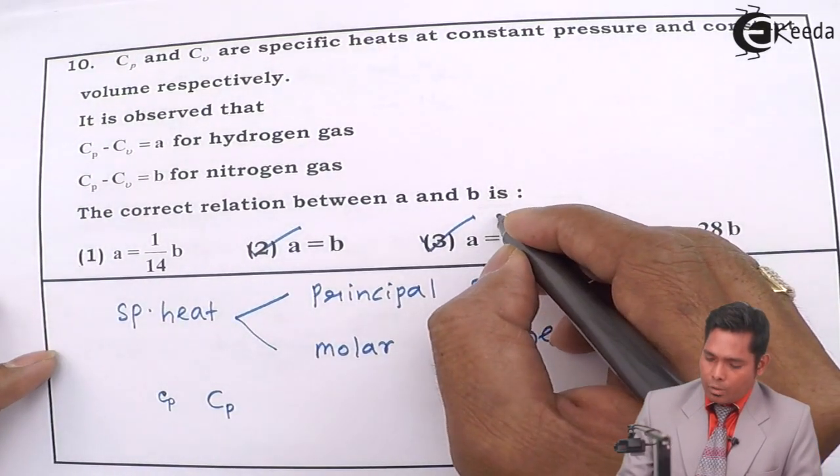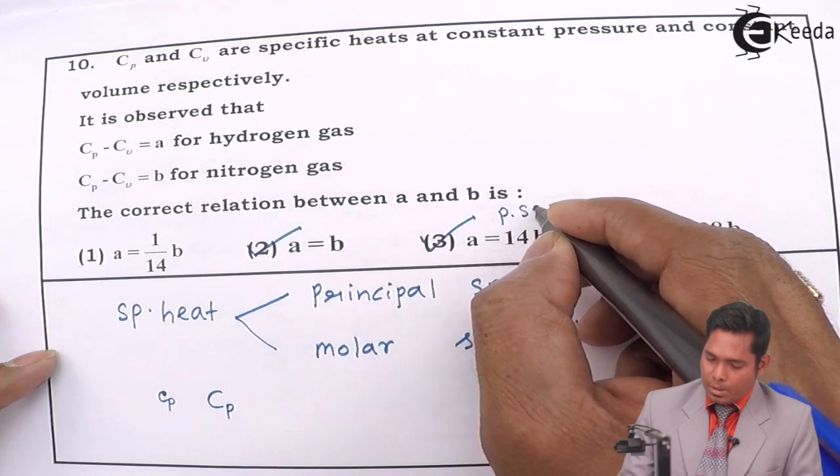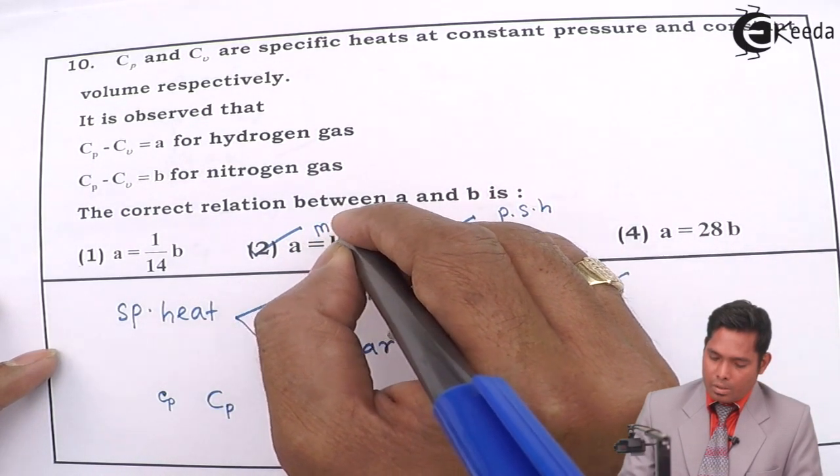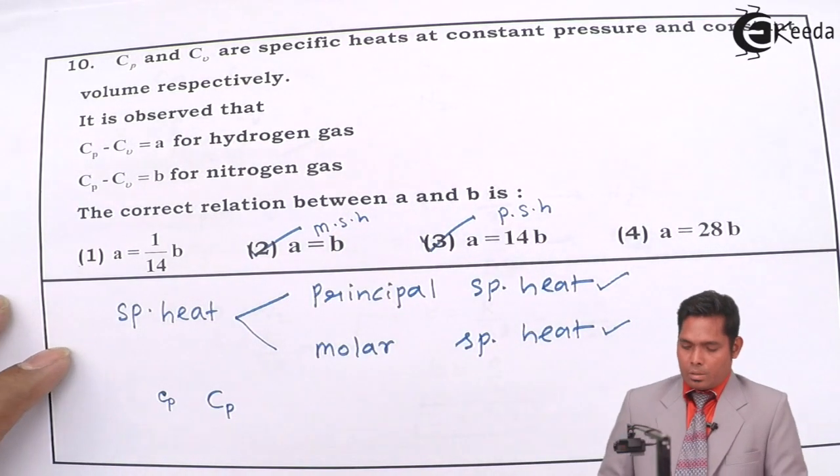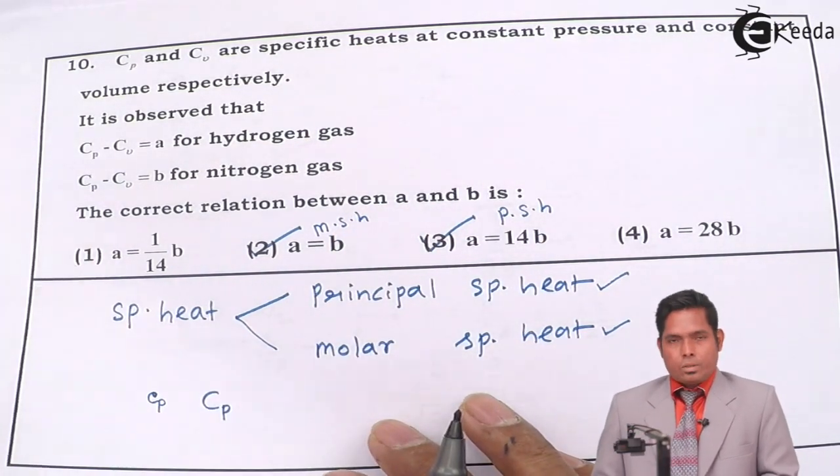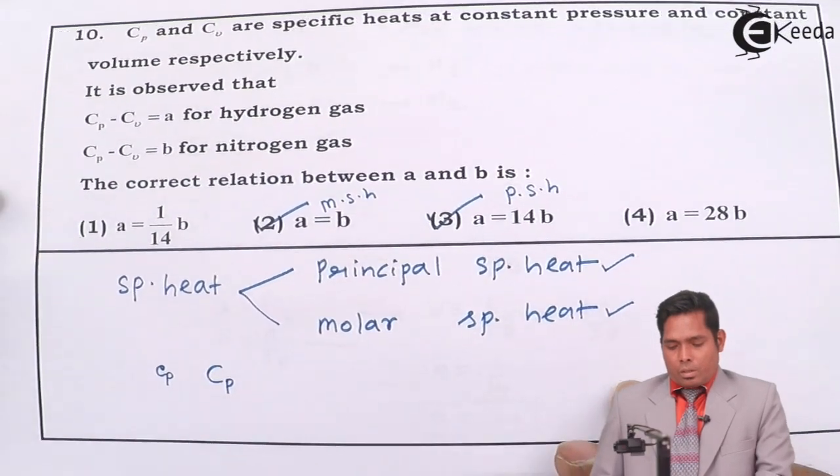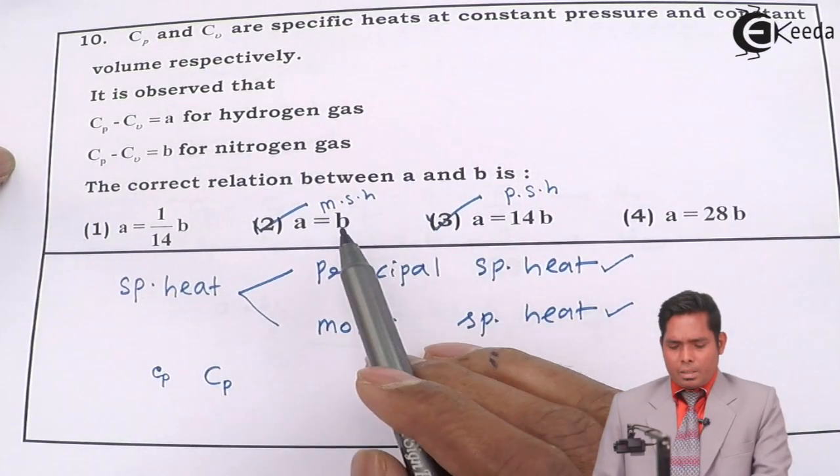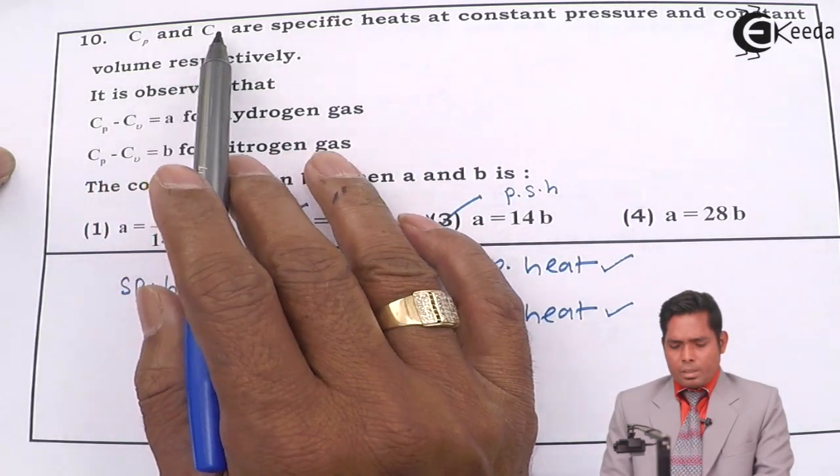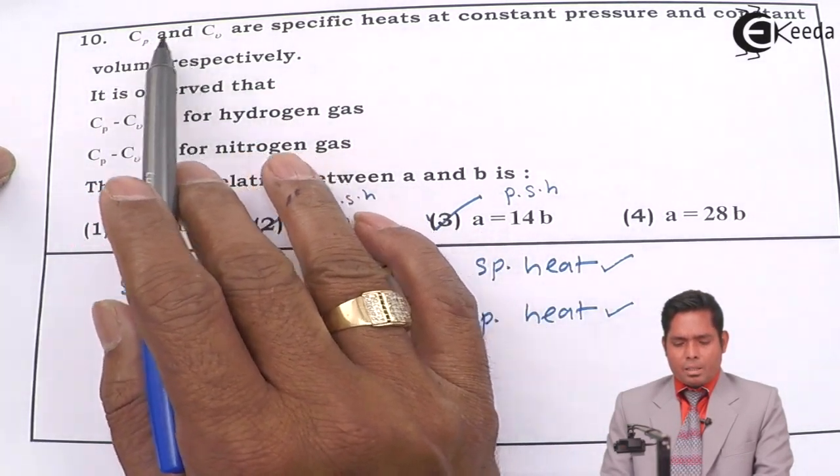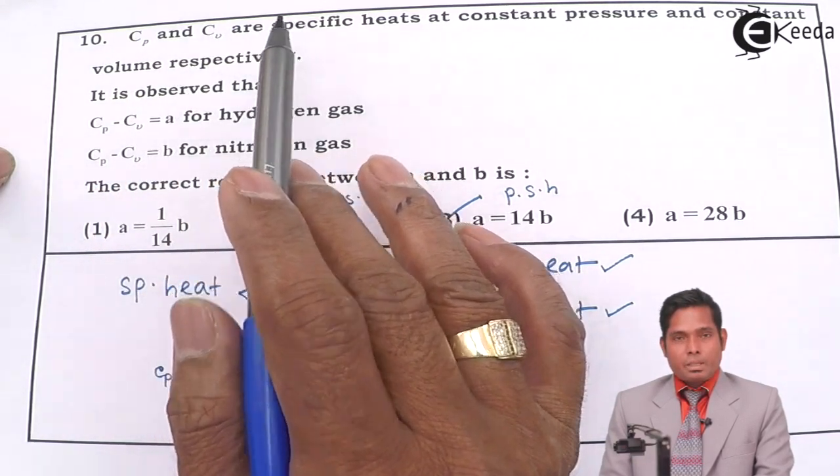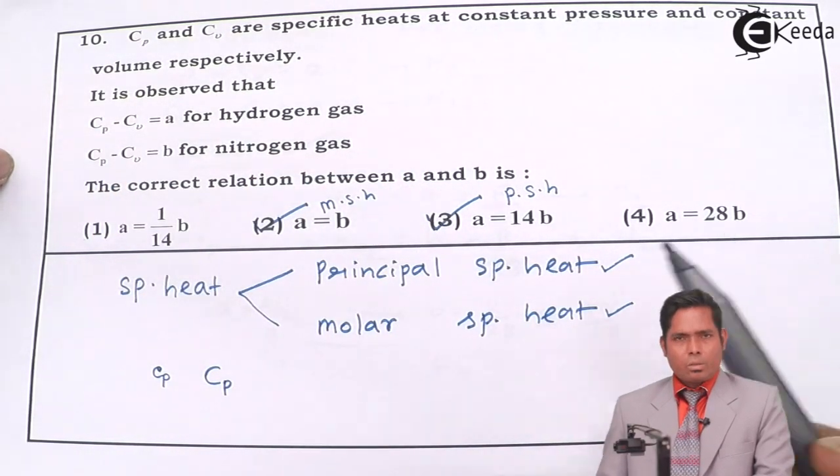So this is the answer for principal specific heat, this is the answer when you take molar specific heat. So depending on whichever you will choose, but probably if you go by this, then it is better because it seems capital, but it being capital doesn't mean it is molar because nothing is mentioned. So you can have both the answers. You can go anywhere. Okay, thank you.